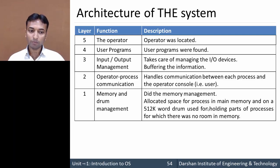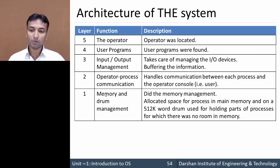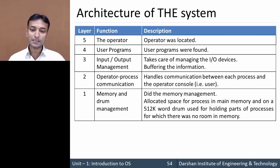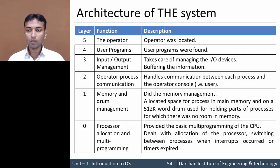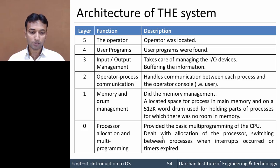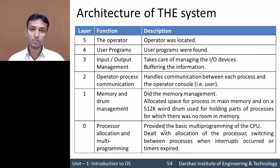Layer 1 performs memory management — it allocates space for a process in main memory and on a 512K word drum used for holding parts of processes for which there was no room in memory. If sufficient space is not available in main memory, it allocates memory from the 512K word drum. Below level 1 is level 0, processor allocation and multiprogramming, which provides basic multiprogramming of the CPU, dealing with processor allocation and switching between processes whenever an interrupt occurs or a timer expires.